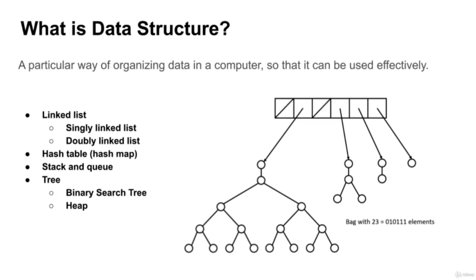Next, what is data structure? Data structure is a particular way of organizing data in a computer so that it can be used effectively. We'll discuss this in more detail later in the course. Data structures are a way we can store and retrieve data, designed so that we can get the desired result. Some of the major types of data structures we'll cover in this course are linked list, hash table, stack and queue, and tree.